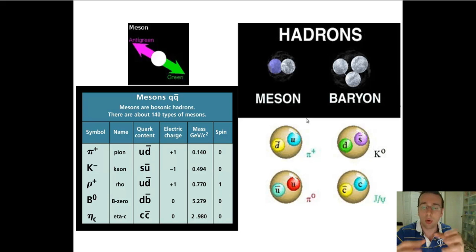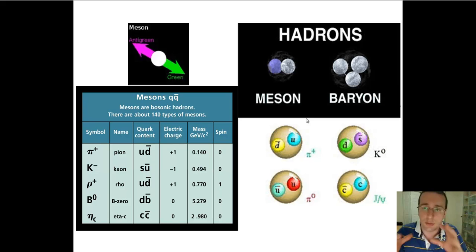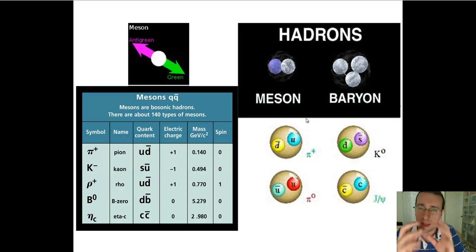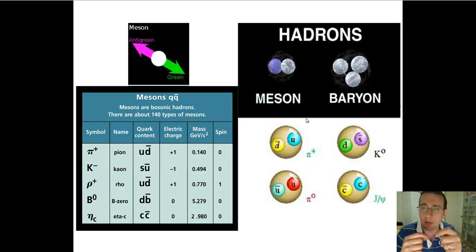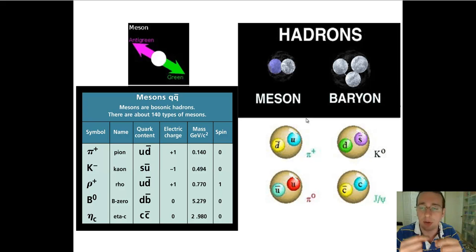Just like gluons coordinate the fundamental strong force at the quark level, the residual strong force is coordinated by these mesons. To explain why protons can actually stick together in the nucleus — or why neutrons and protons are all sticking together as a unit in atomic nuclei — basically what's happening is that the protons and neutrons are exchanging mesons between them. And every time they do so, they release a little bit of energy that's actually used to stick them together.